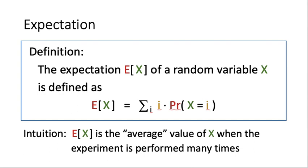Welcome back. In this part of the lecture, we will talk about expectation. The expectation E of x of a random variable x is defined to be this sum. We sum over all the possible values of i that x can take on, and it is a weighted sum — the value of i is weighted by the chance that x will be equal to i.